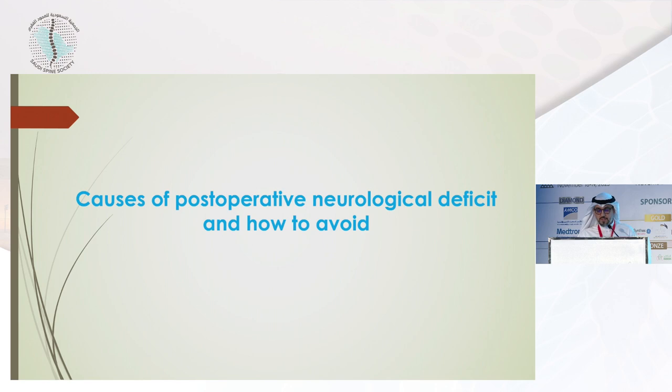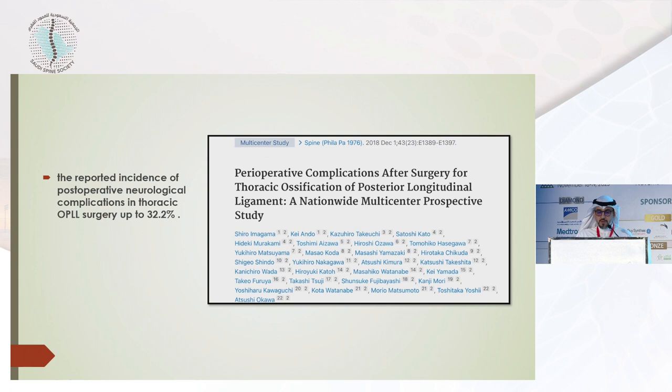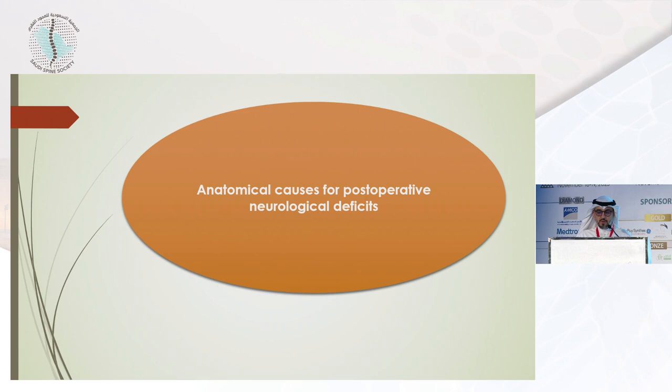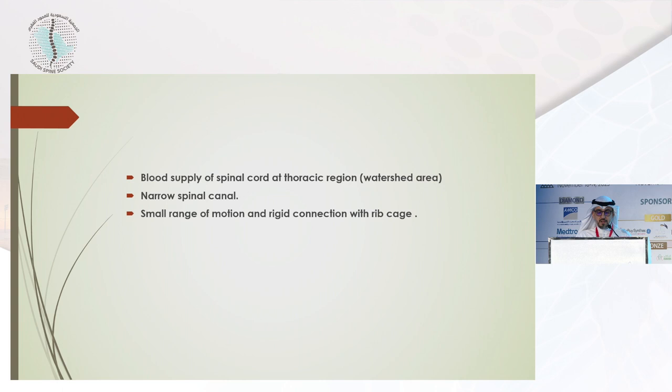Causes of postoperative neurological deficit and how to avoid them: one study by Shiro reported the incidence of postoperative neurological deficit complication in thoracic OPLL surgery to be up to one-third. We have anatomical, pathological, and surgical-related causes. The anatomical causes include the blood supply, the narrow spinal canal, and the small range of motion.